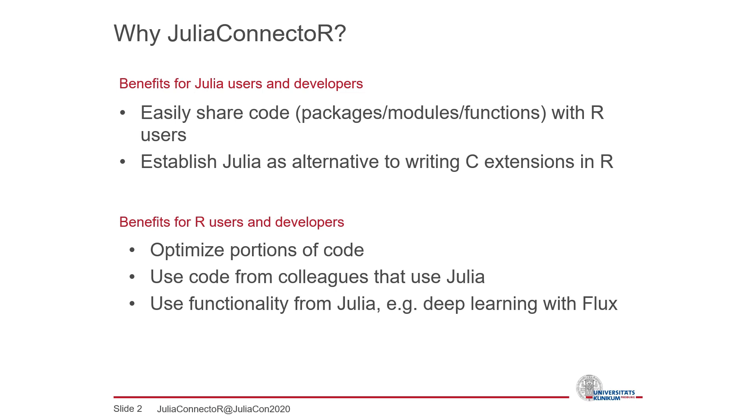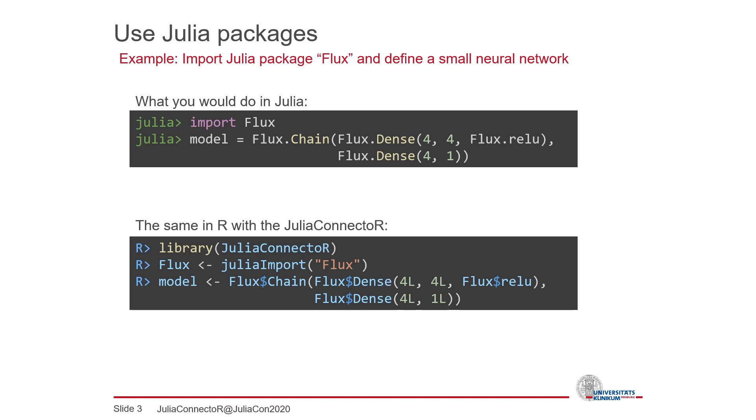Here you can see how easy it becomes to use functionality from Julia packages in R. For example, if you would like to create a neural network using Flux, you can do this in Julia in the following way. You call dense to create densely connected neural network layers with the given numbers of units and an activation function. These layers can then be connected with the chain function.